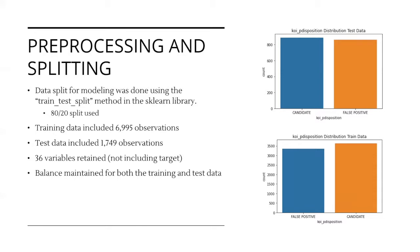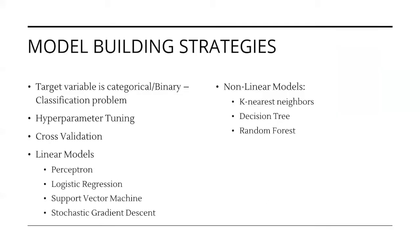Data pre-processing, like centering and scaling, will be done after the data is split to avoid data leakage. Since our target variable is categorical and binary, this is a classification problem. We'll focus on linear and non-linear models that predict the label for each observation. Each model will first be fit on the training data, and then validated using the test data set.